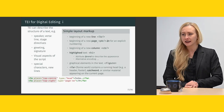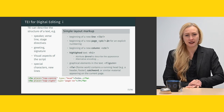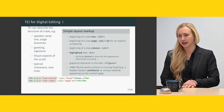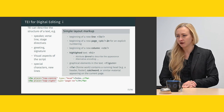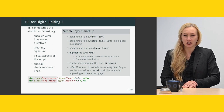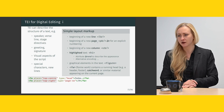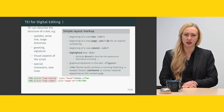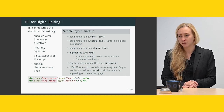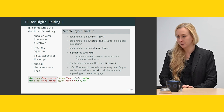As you already know, the TEI can describe the structure of a text. That can be very basic elements like speaker, layout, verse, line, stage directives for these types of texts, but also greetings, signatures, visual aspects of the script, special characters, and new lines.